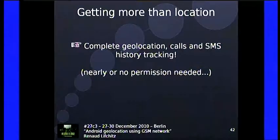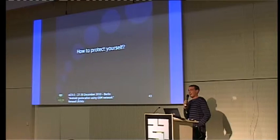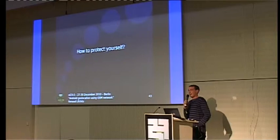So you now have complete geolocation, call, and SMS history tracking with nearly no permission needed. How to protect yourself? Don't buy an iPhone — Android's security model is actually stronger: each application has a different user ID and group ID, which iPhones don't have. iPhone applications share the same rights, and there's no fine-grained permission model. There are also no hidden or forbidden APIs on Android, unlike Apple's model.